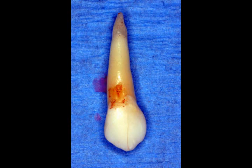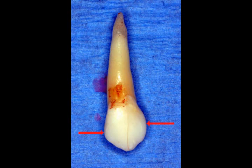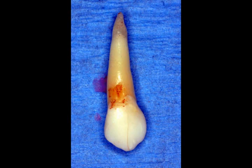To determine which tooth number this is, we need to determine the mesial versus the distal. Both the mesial and distal are curved, but the distal is more curved. Looking at the contacts at the widest portion of the tooth, they sit at different heights — the distal contact sits lower, or closer to the CEJ. With all this in mind, this is the maxillary left canine, tooth number 11.